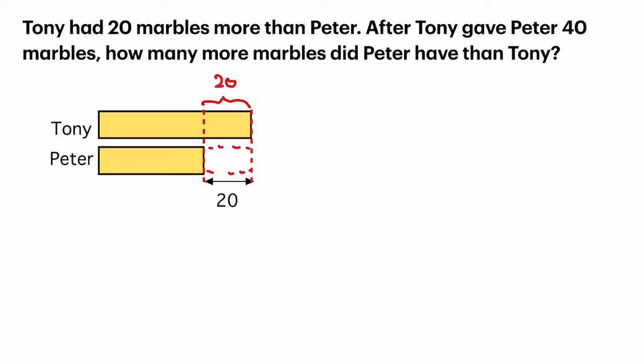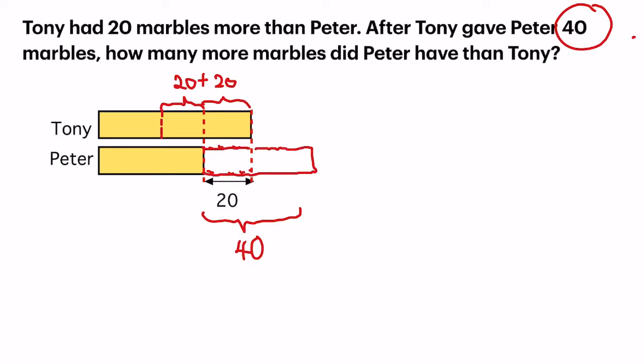How many more does Tony have to give Peter? Another 20 more to make up to become 40. So where did the next 20 come from? It will come from this part of the model. 20 plus 20 equals 40, so I'm going to move them down. And this is the part that they will have — that's 40.